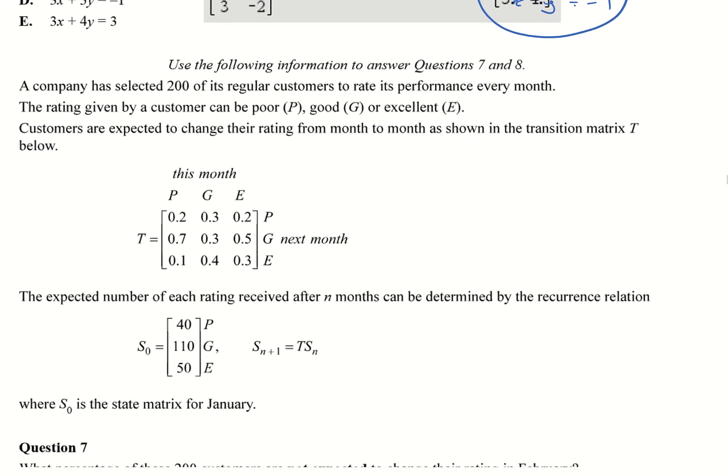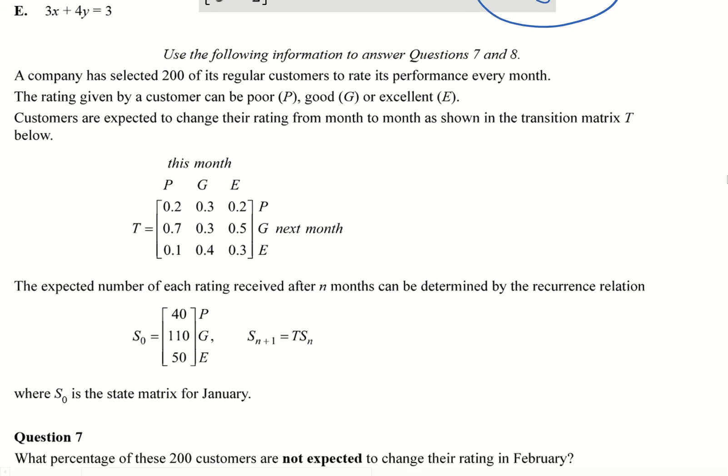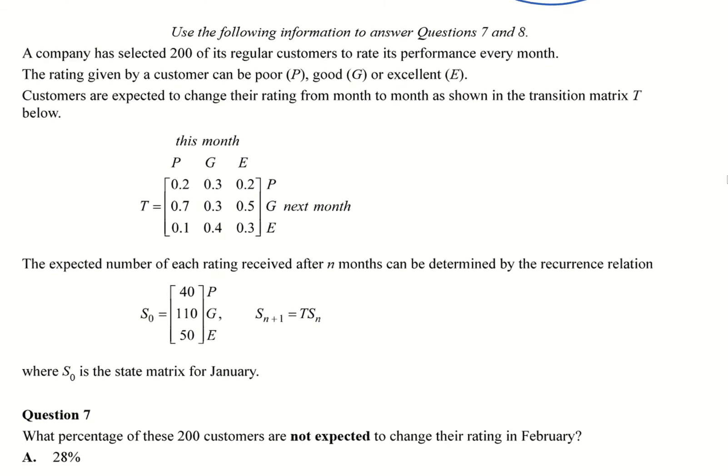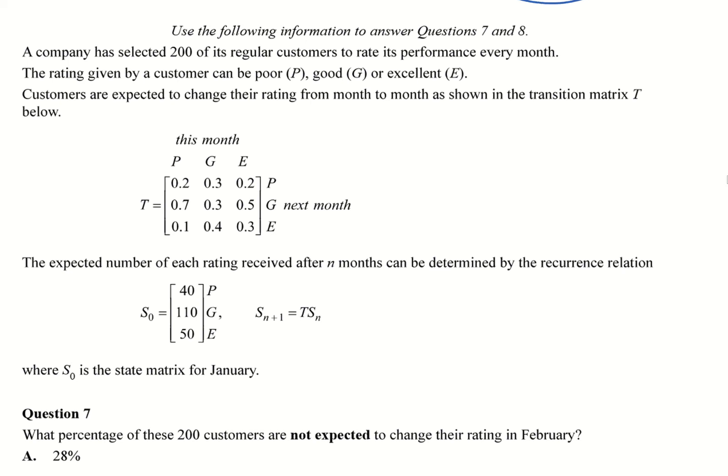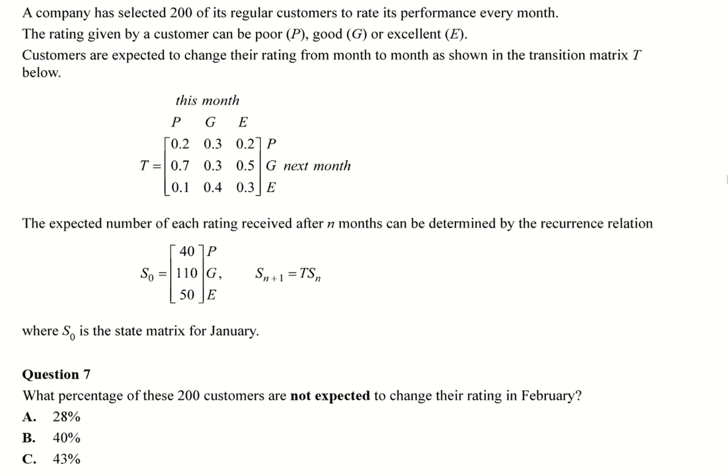A company has selected 200 of its regular customers to rate its performance every month. The rating given by a customer can be poor, good, or excellent. Customers are expected to change their rating from month to month, as shown in transition matrix there. The expected number of each rating received over the end months can be determined by this recurrence relation shown there. So where S0 is January. What percentage of these 200 customers is not expected to change their rating in February? So keep in mind, S1 would be February. So that's what we've got to keep in mind for this one.